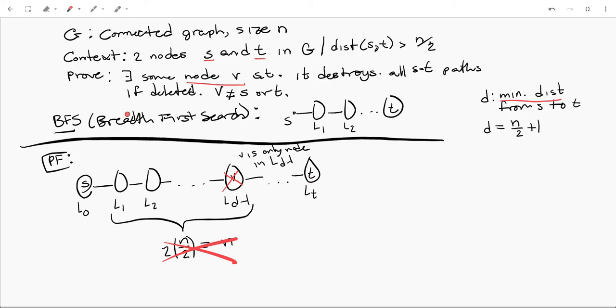So again, just to summarize, we're trying to prove there's some node V such that deleting it destroys all ST paths. And we showed that by saying, well, if you conduct a breadth-first search from S to T, you're going to have to cover at least one more than N over 2 layers, right? Because S and T have to be separated by at least D, which is N over 2 plus 1.